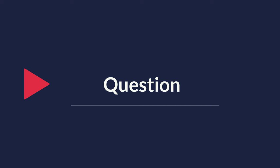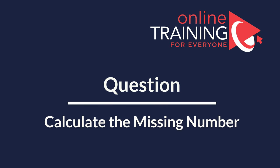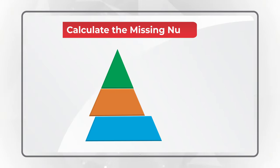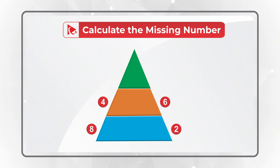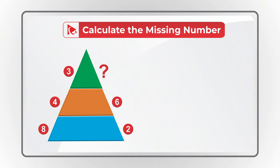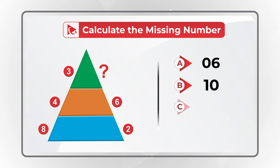Here's an amazing question to test your analytical skills — you need to calculate the missing number. You are presented with a triangle split into three equal parts. At the bottom of the triangle on each side you see numbers 8 and 2. In the middle section you see numbers 4 and 6. On the top of the triangle you see number 3 on the left, and on the right you need to calculate the missing number. Choices: A. 6, B. 10, C. 7, and D. 2.